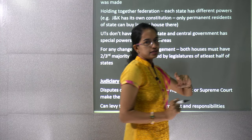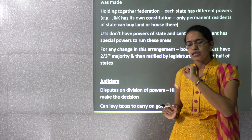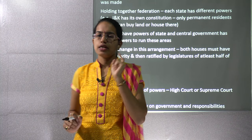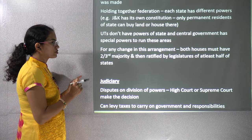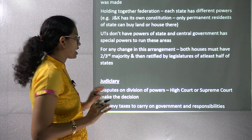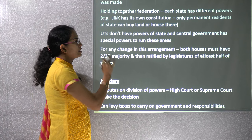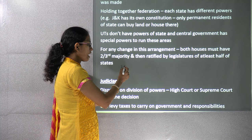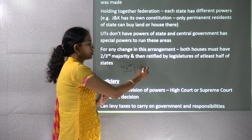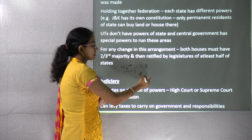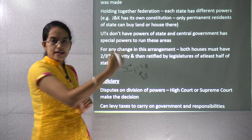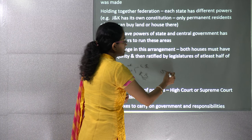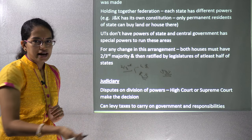We have 29 states and 7 union territories. Those 7 union territories fall directly under the central government and do not have the same powers as states. For any change to these arrangements, both houses — Lok Sabha and Rajya Sabha — must have a two-thirds majority, and then it must be ratified by the state legislatures with at least 50% acceptance.